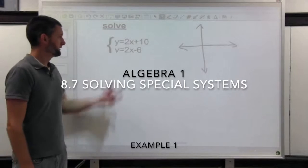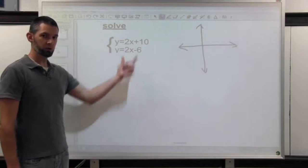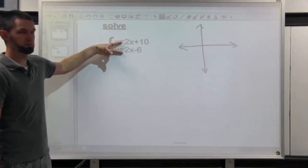So take a look at this system. Y equals 2x plus 10 and y equals 2x minus 6. They're both slope intercept. They both have the same slopes.